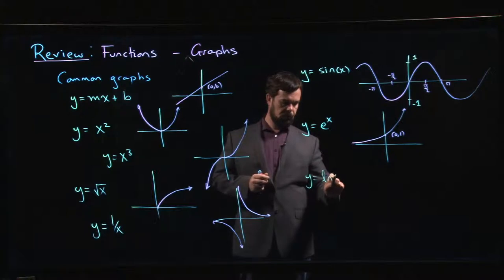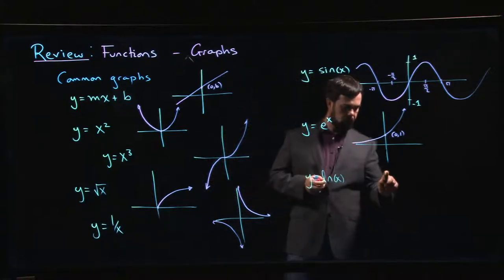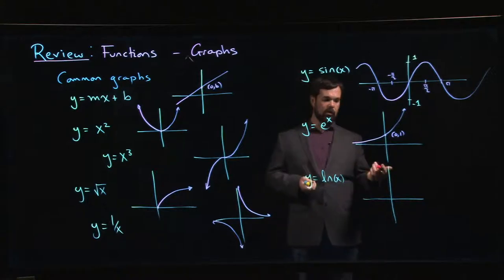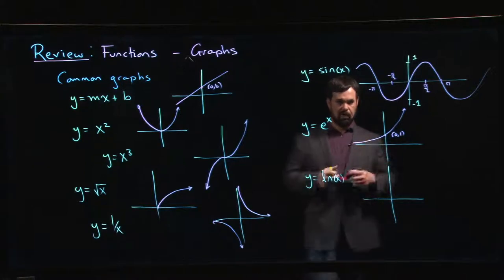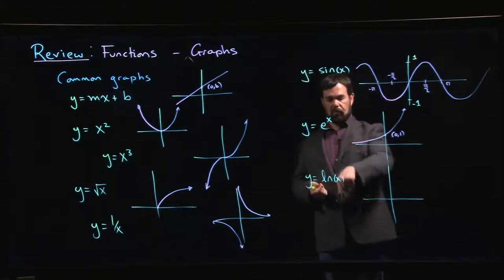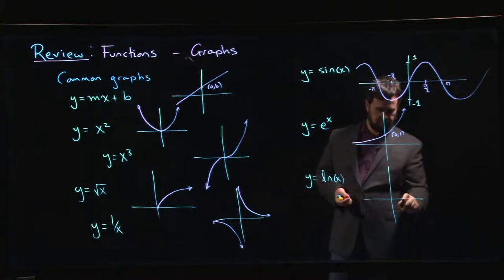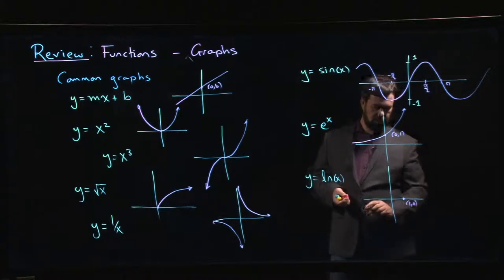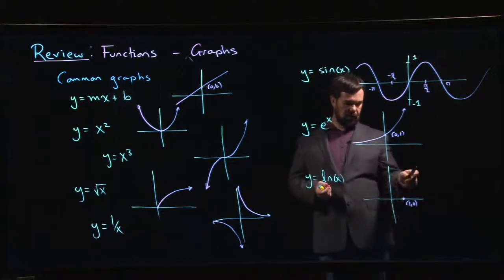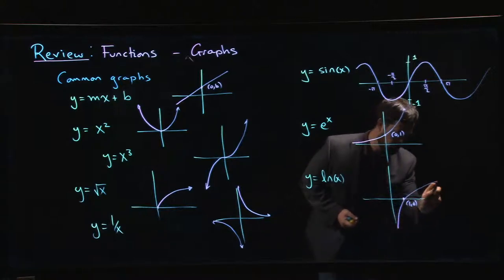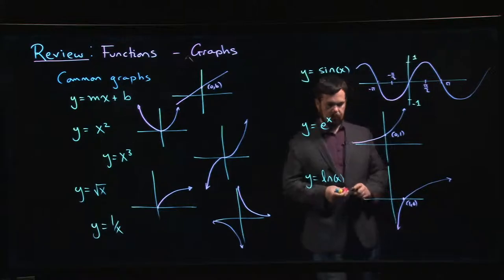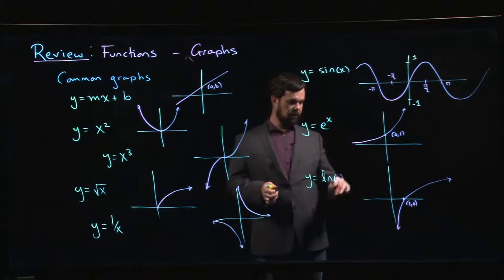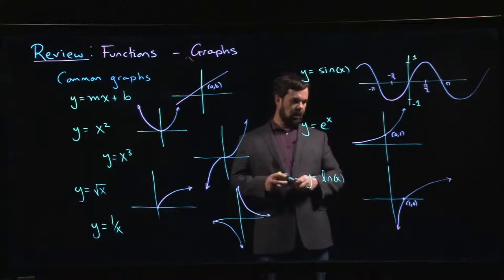The last sort of common function whose graph you should know is the natural log. The natural log is the inverse of the exponential function. If you're doing a log to another base, the graph is going to look the same, just kind of stretched a little bit. Because of the inverse relationship between these two functions, the y-intercept for the exponential function, we flip the coordinates and we get an x-intercept for the natural log. This horizontal asymptote becomes a vertical asymptote. The natural log has this domain issue: it's only defined for positive numbers, it's undefined if x is zero or negative, so we only get a piece of the graph that looks like that.